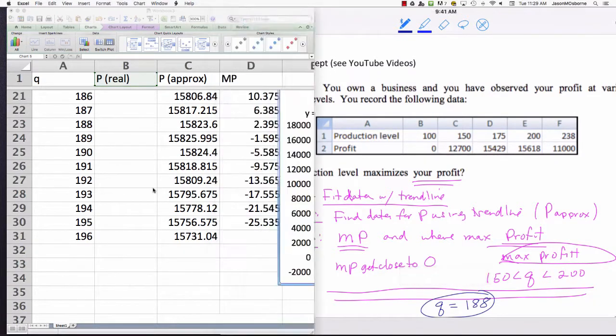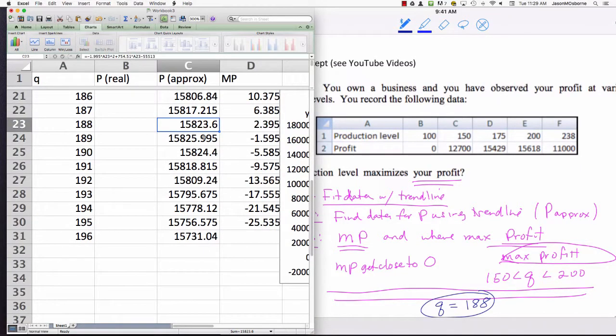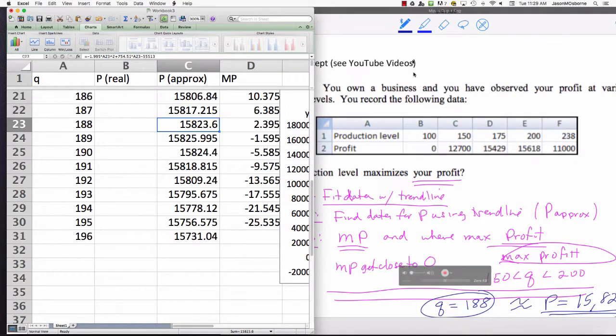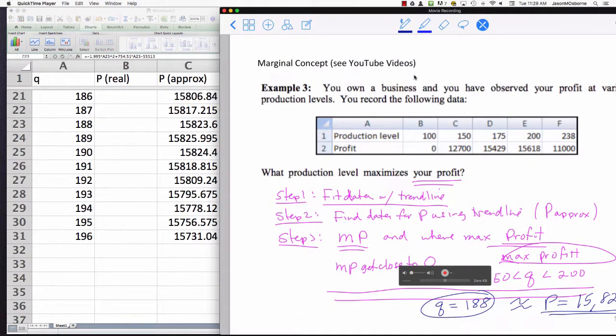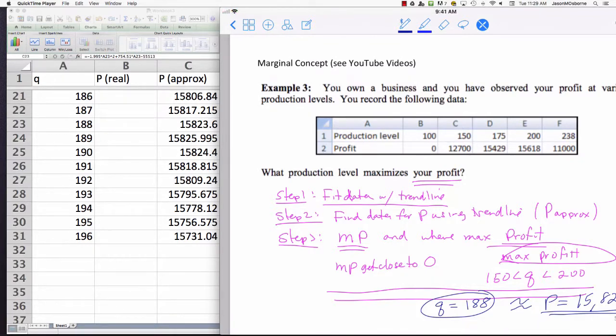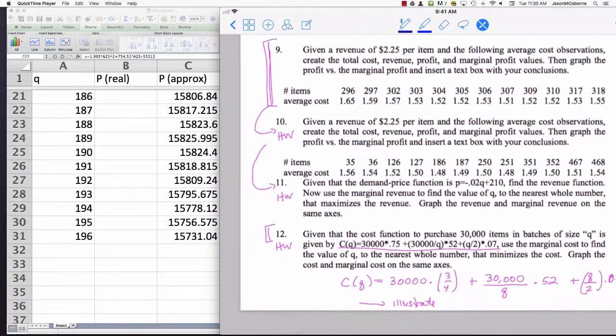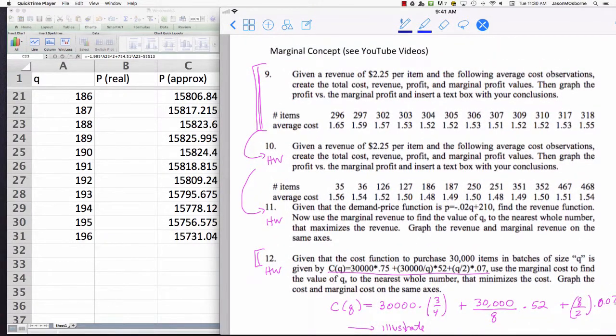Therefore, your maximum profit is going to be somewhere around $15,823.60. So that's kind of in the ballpark, and that ends this video on using the marginal profit to estimate where the maximum occurs. You should be able to do that same idea with number 12 - the marginal cost function to figure out where the minimum costs occur. And the minimum will occur when the marginal cost gets close to zero.